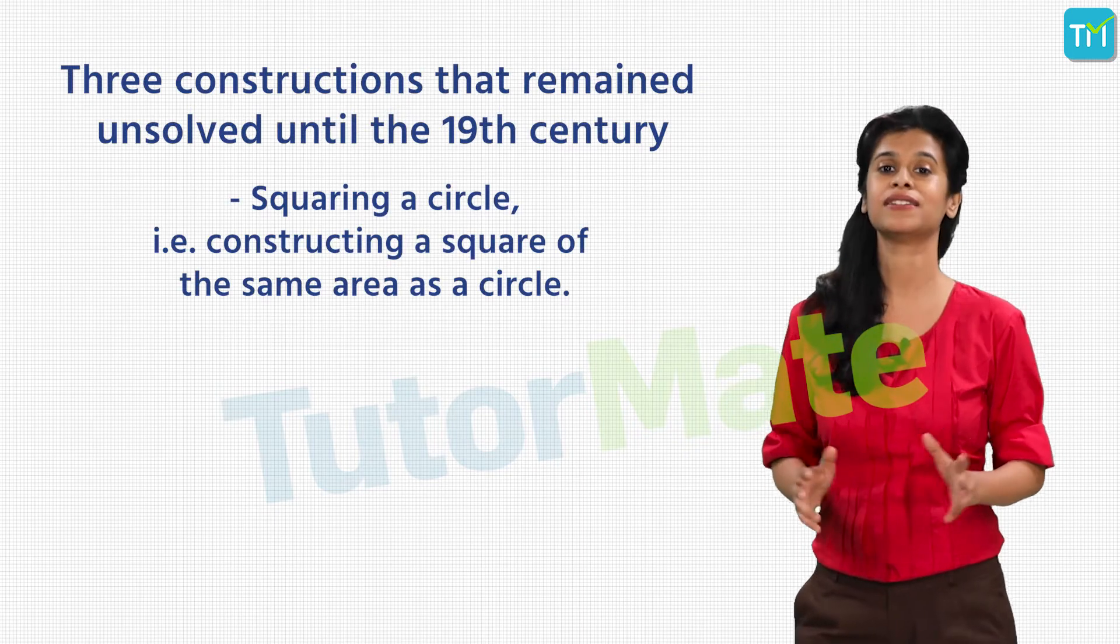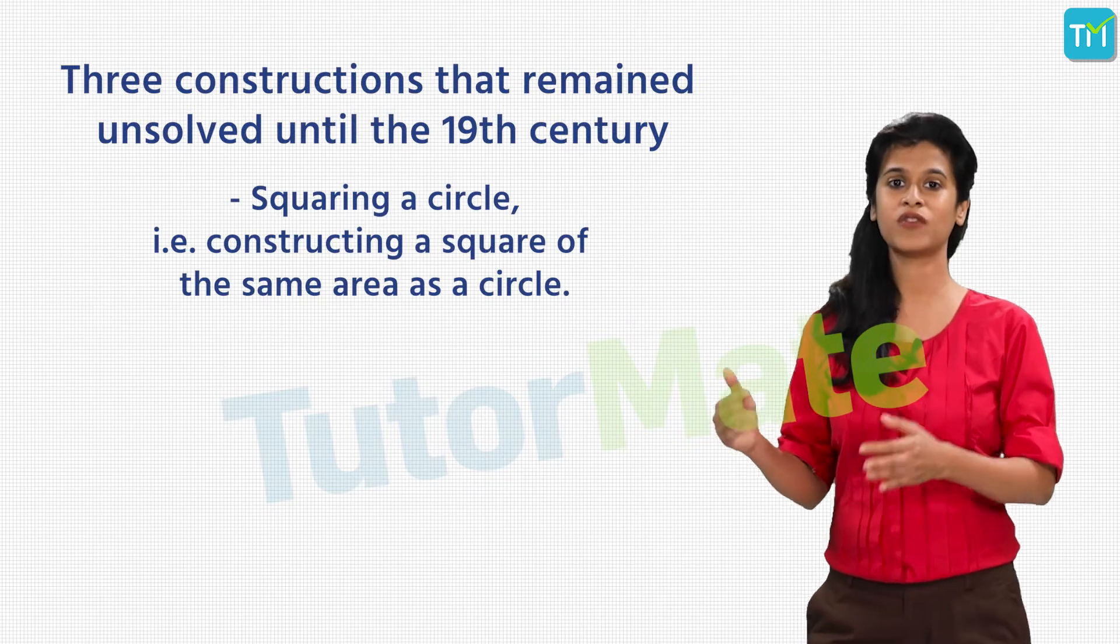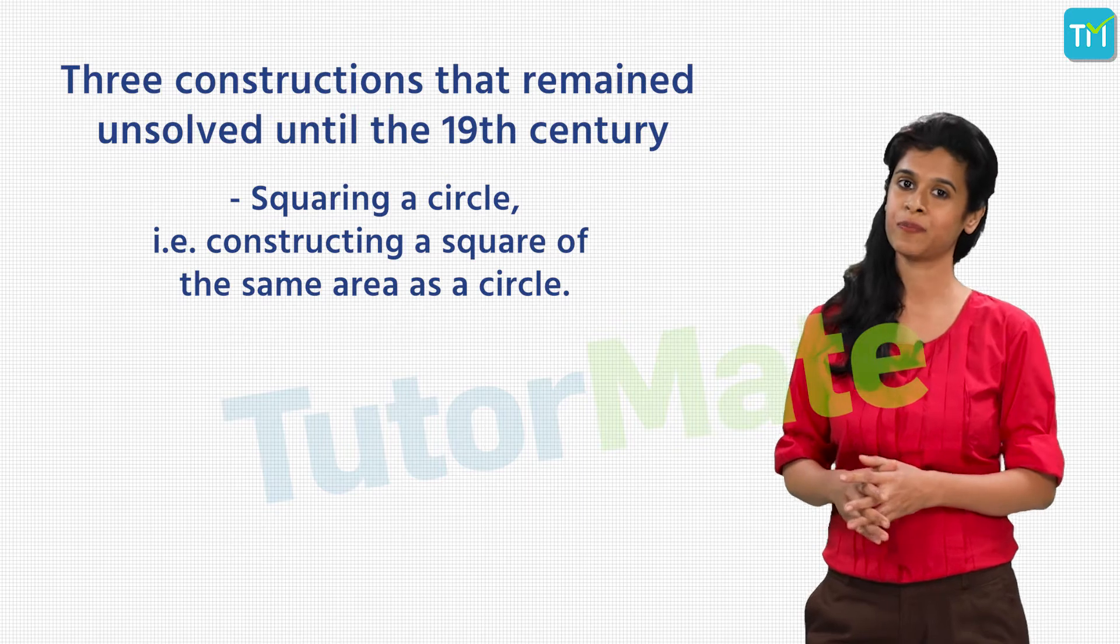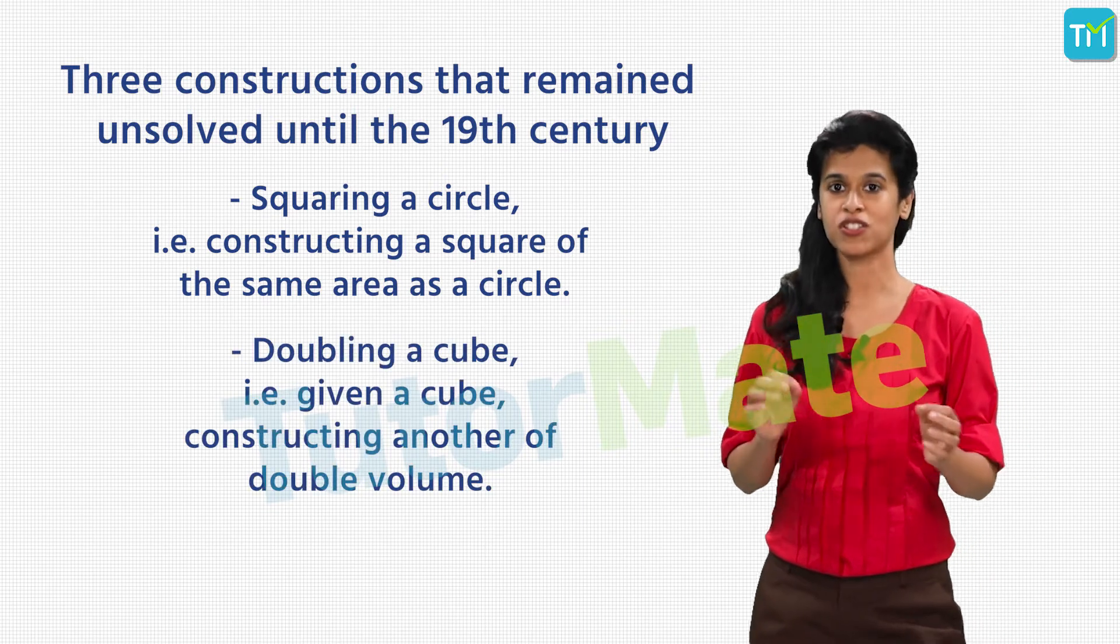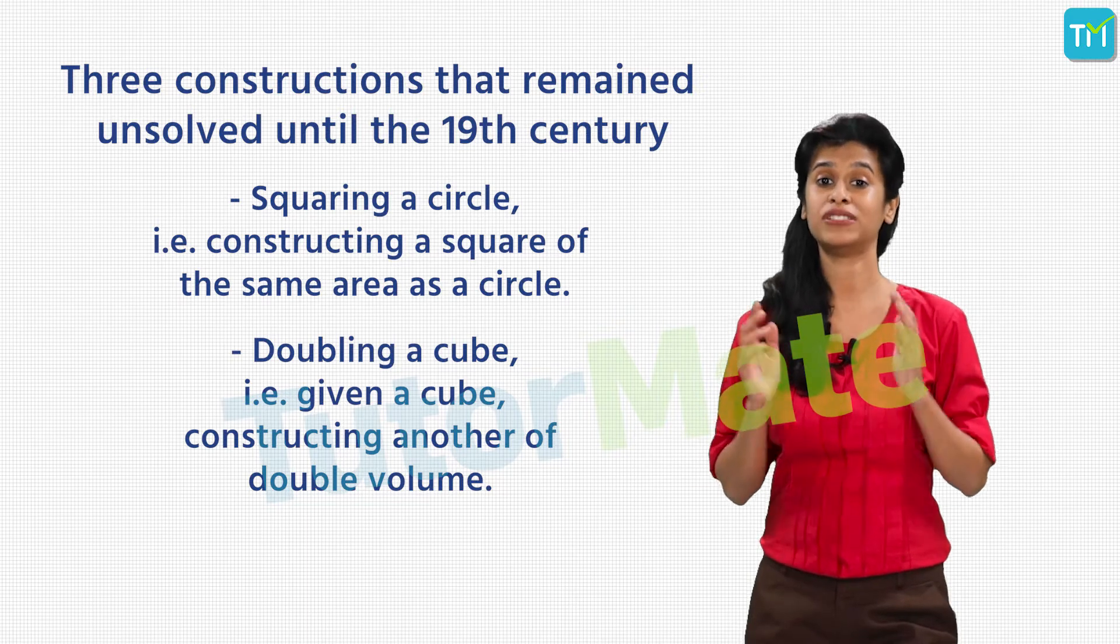Squaring a circle—that is, constructing a square of the same area as a circle. Doubling a cube—that is, given a cube, constructing another of double volume. Trisecting an angle.